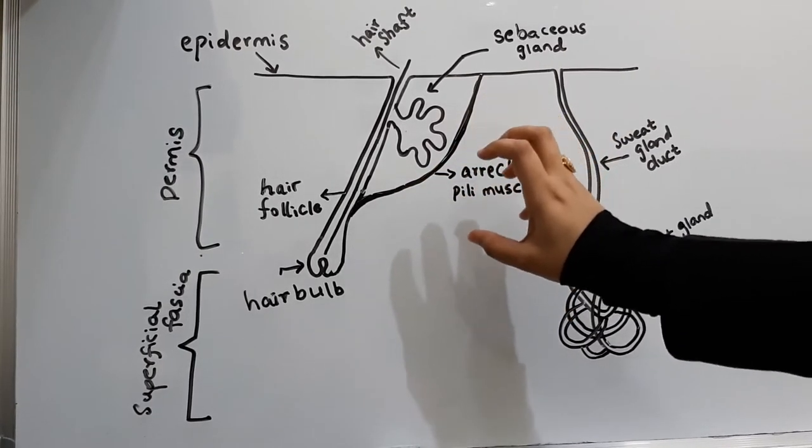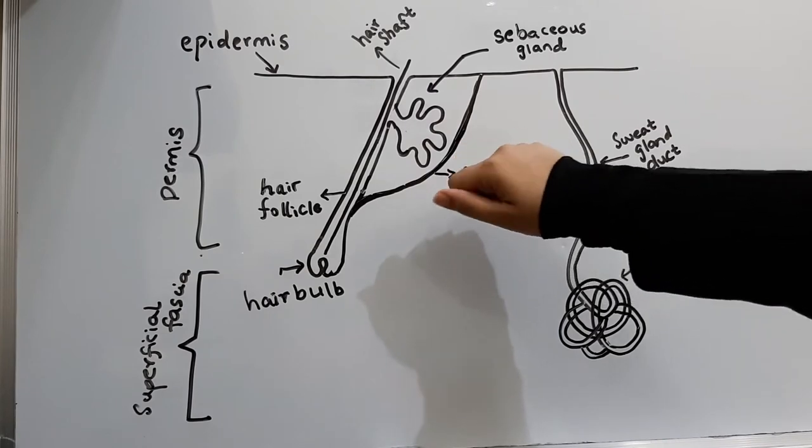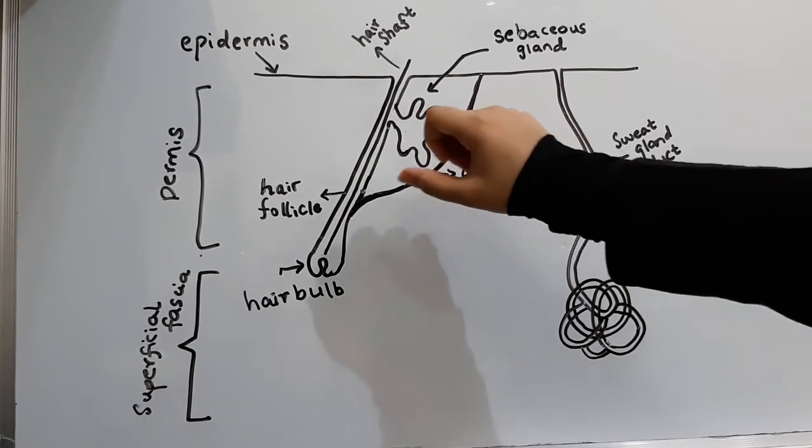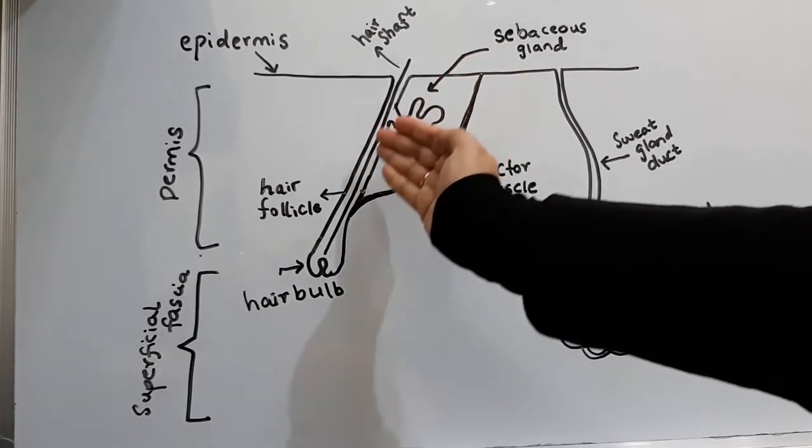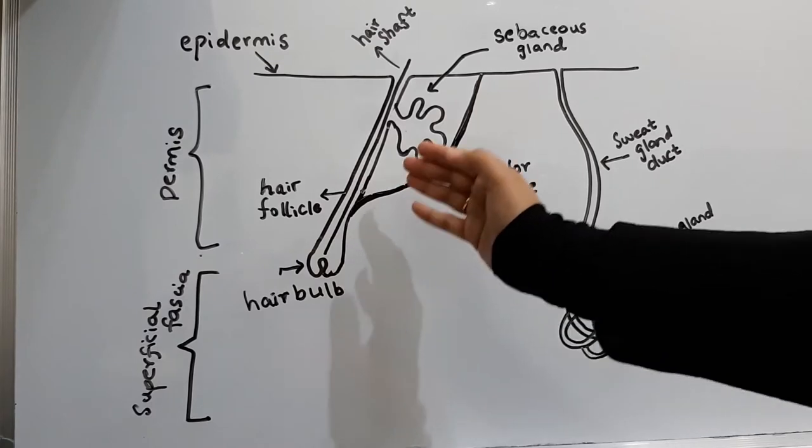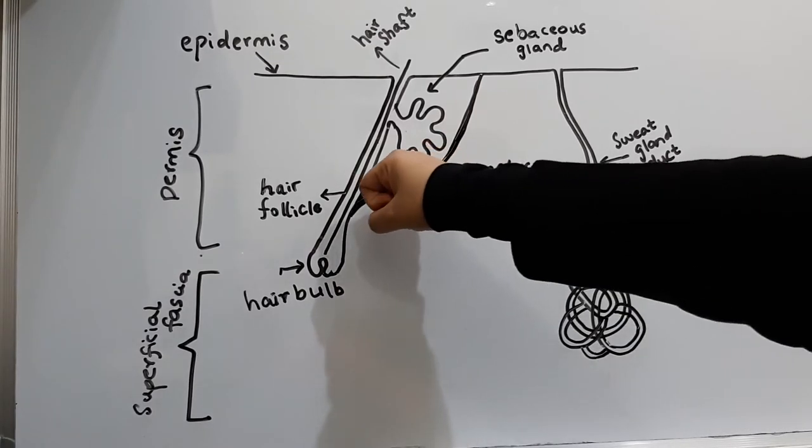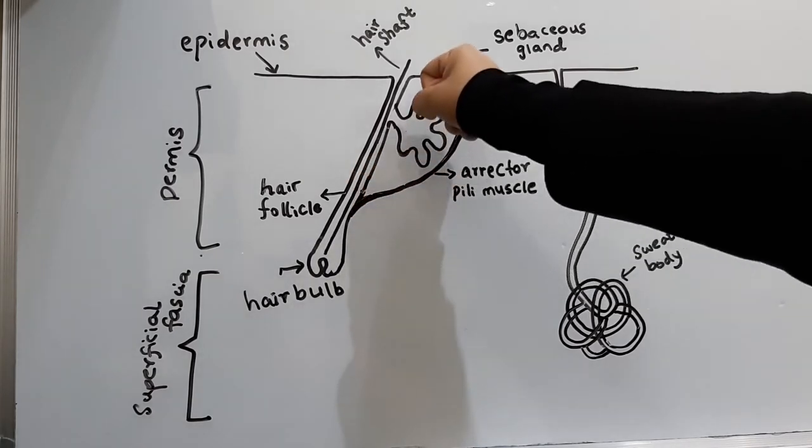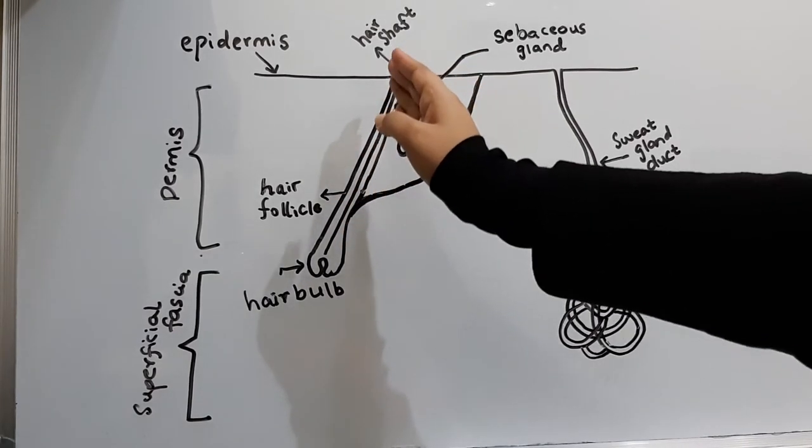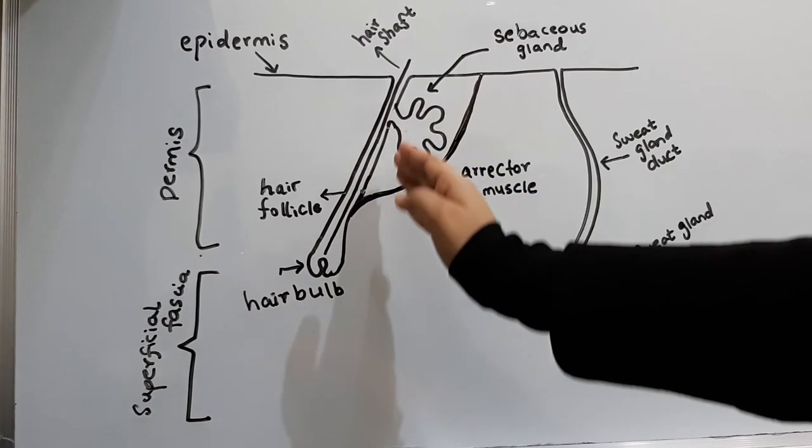When the sympathetic nervous system activates, this muscle contracts. The contraction of this muscle pulls the hair follicle from its normal oblique position to a more vertical position, like this.